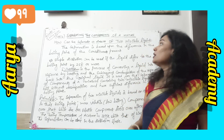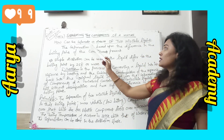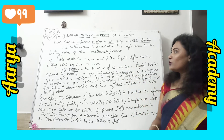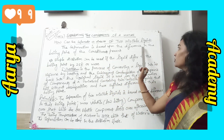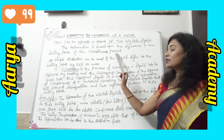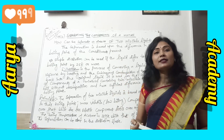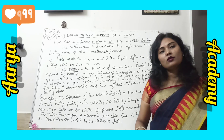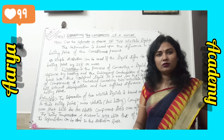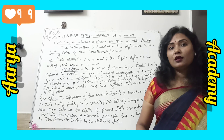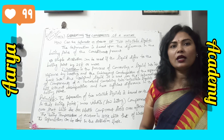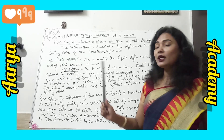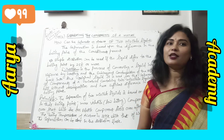Today we will start how we can separate a mixture of two miscible liquids. The separation is based upon the difference in boiling points of the constituents present. For example, if two miscible liquids are water and alcohol, or water and acetone, these mixtures are completely mixed together and we cannot distinguish which constituent is present in them.